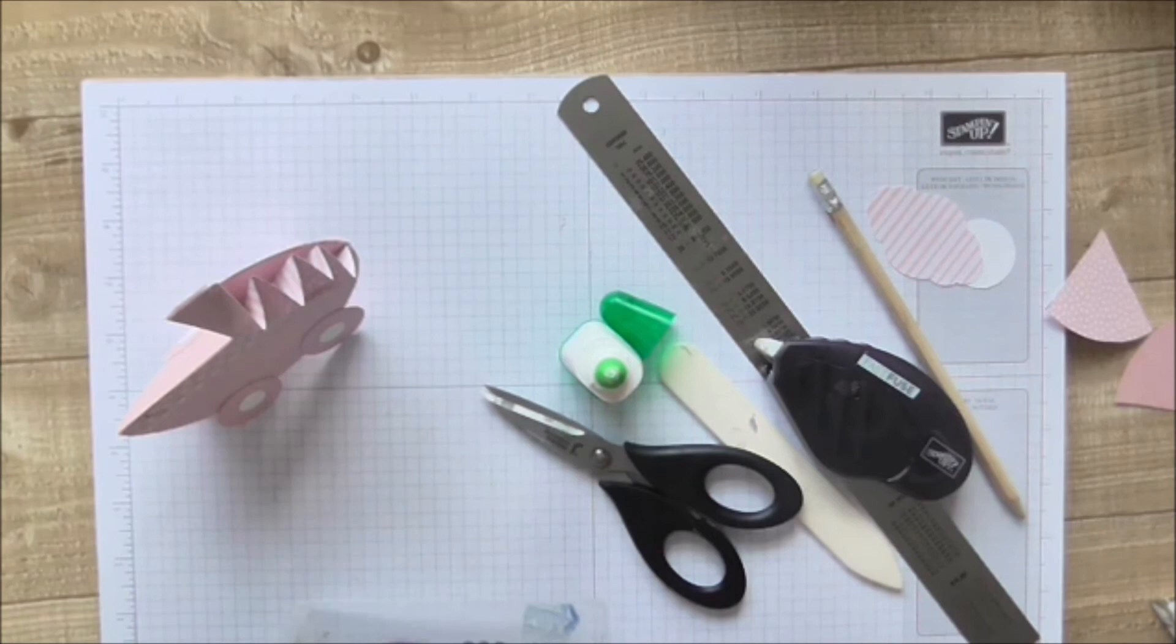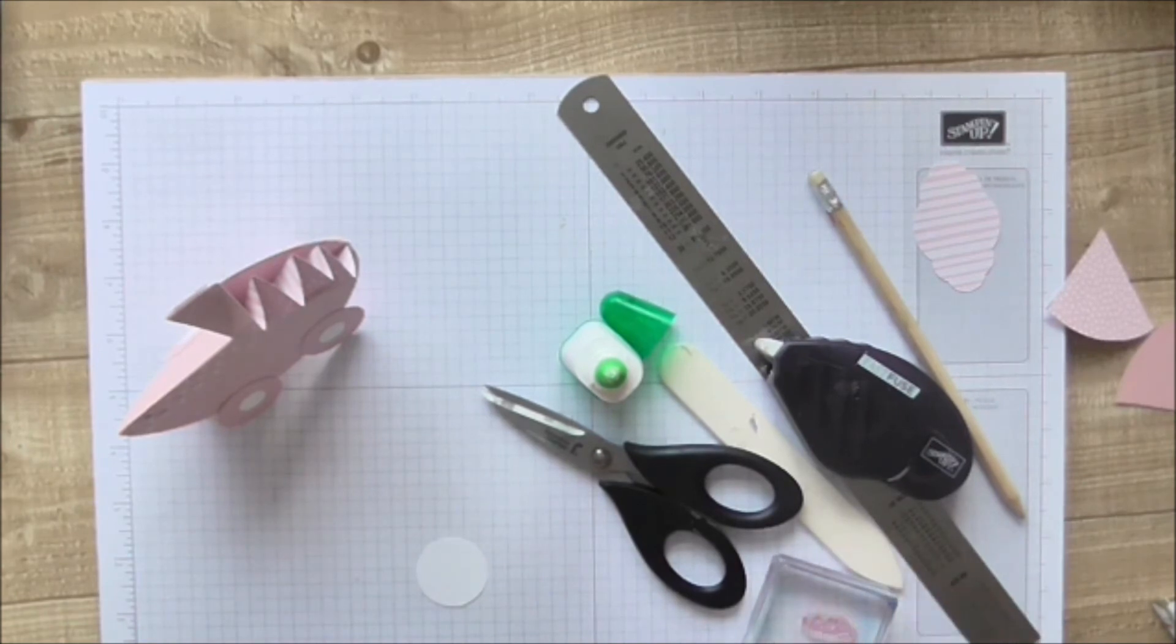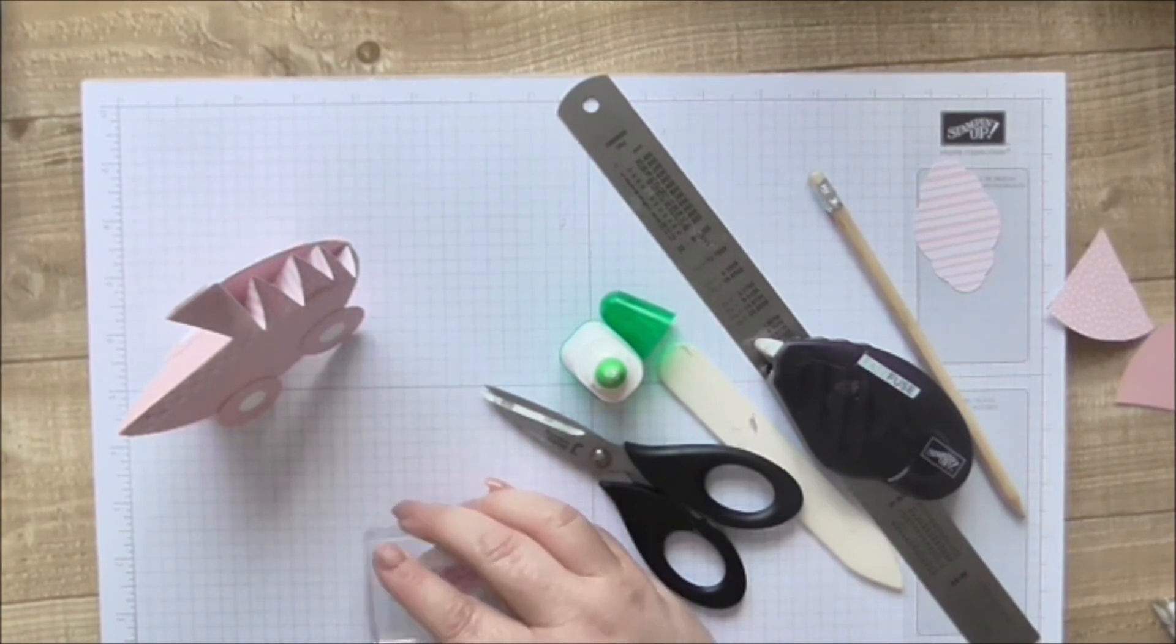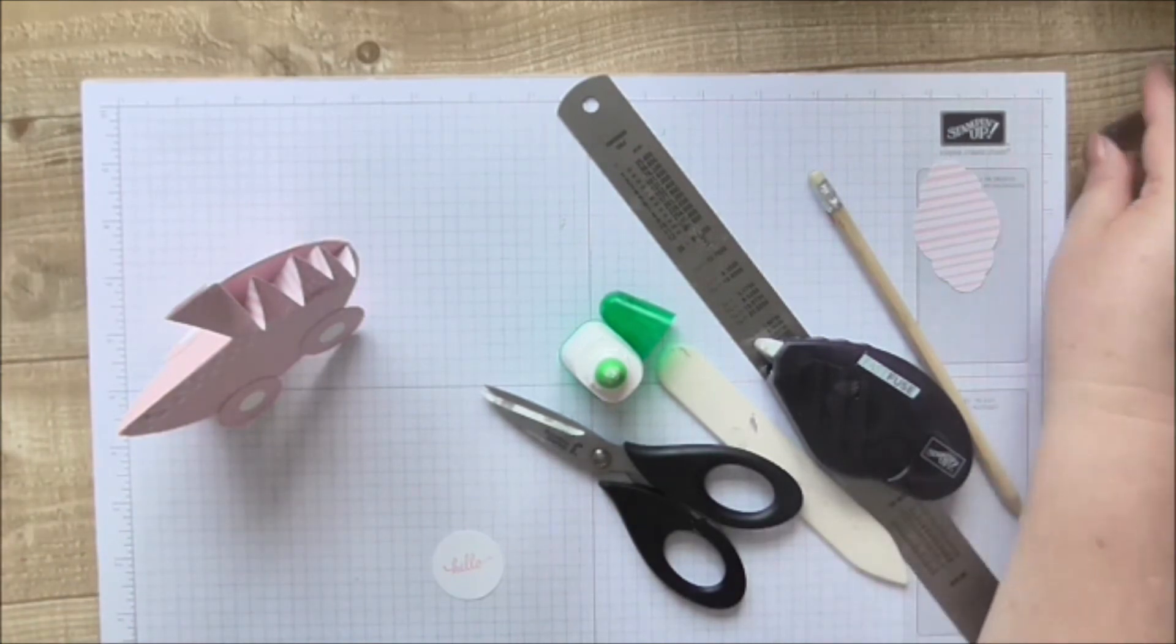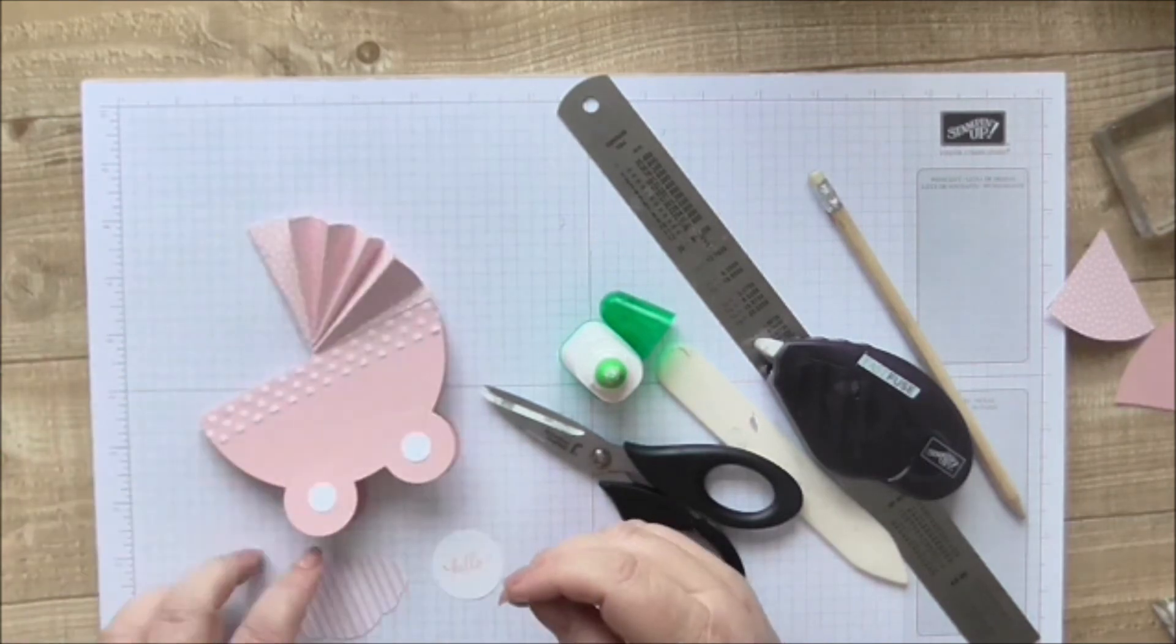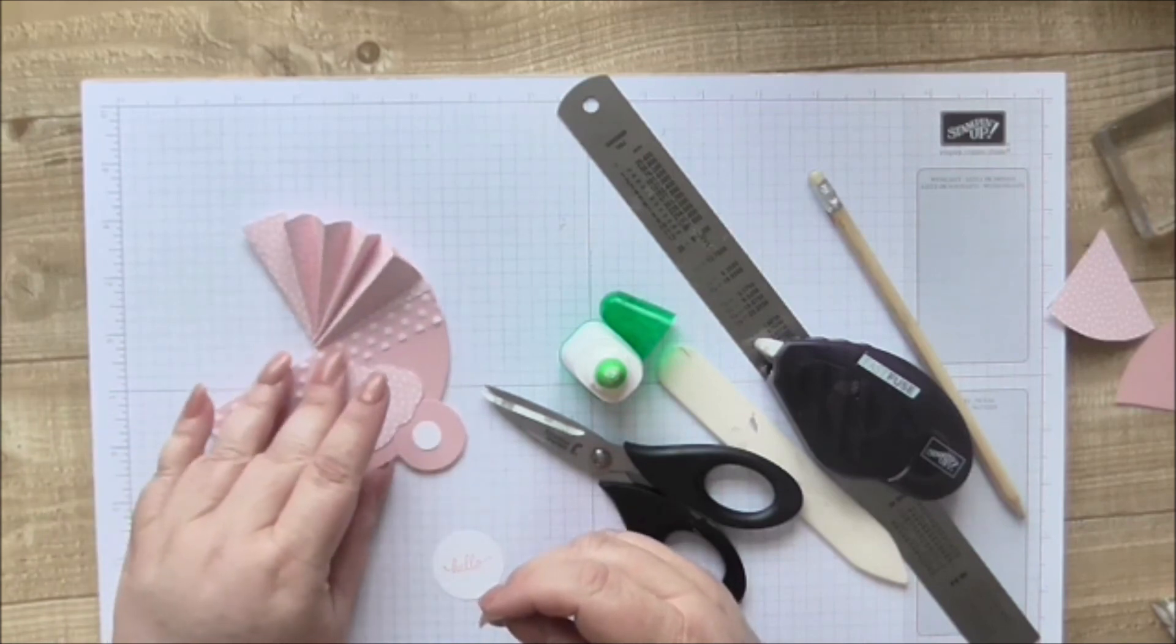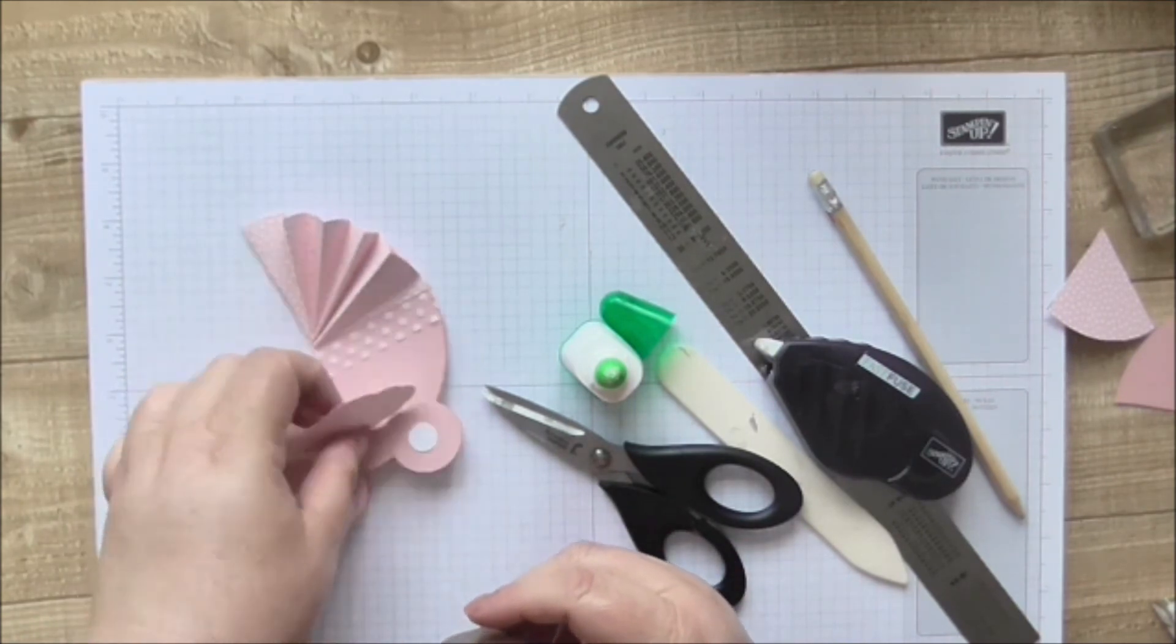I'm just going to stamp hello from the Eastern Beauty set because I've been using the Eastern Beauty set a lot. I'm enjoying seeing its versatility, I'm enjoying using it because I've never used it enough, and I'm determined not to waste my stamp sets. So you could just pop hello on because it's hello to the baby. You could use one of the baby sets, there's some really cute ones in the new catalogue. And then I'm just going to layer that with the polka dot side.